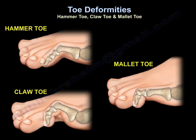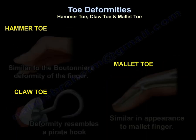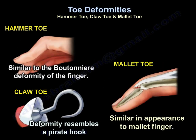Here is a picture representing the three deformities: the hammer toe, the claw toe, and the mallet toe. The hammer toe is similar to boutonniere deformity of the finger, the claw toe resembles a pirate hook, and the mallet toe is similar in appearance to a mallet finger.